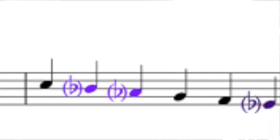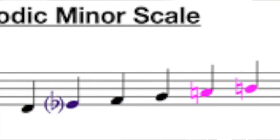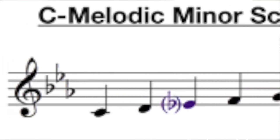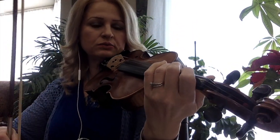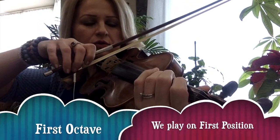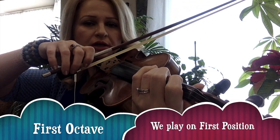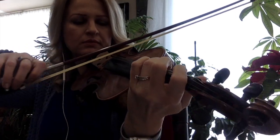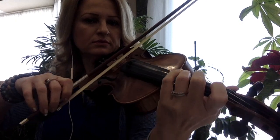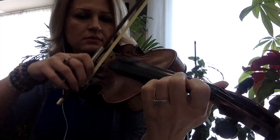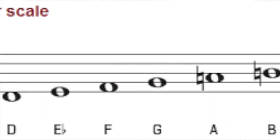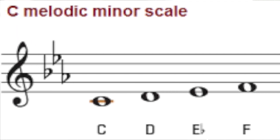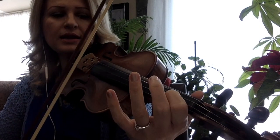So let's get started and play the scale on the violin. First of all we're gonna play the first octave — it starts on C. We know how to get to the C with the third finger because on the first octave we stay on the first position. So I'm gonna play the ascending part. That was only the ascending part where the sixth and the seventh degree are natural — A natural and B natural.